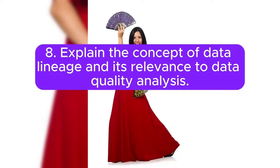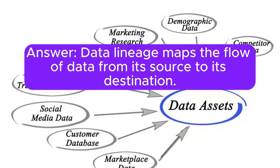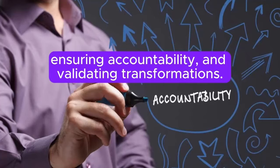8. Explain the concept of data lineage and its relevance to data quality analysis. Answer: Data lineage maps the flow of data from its source to its destination. Understanding data lineage is crucial for tracing data quality issues back to their source, ensuring accountability, and validating transformations.